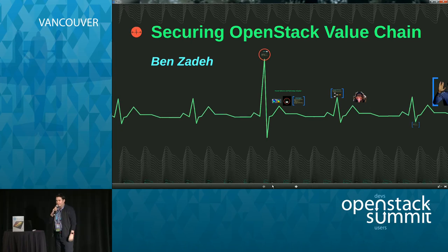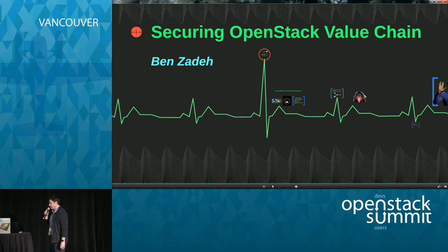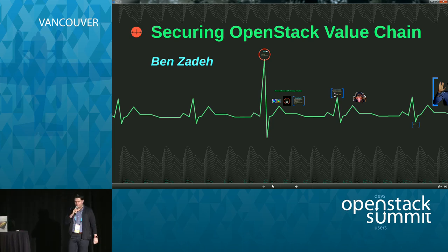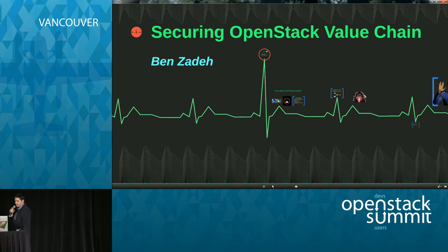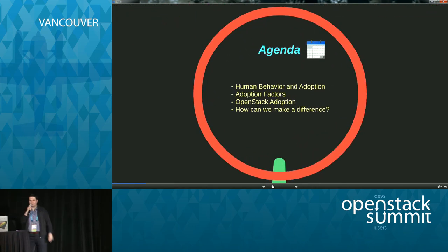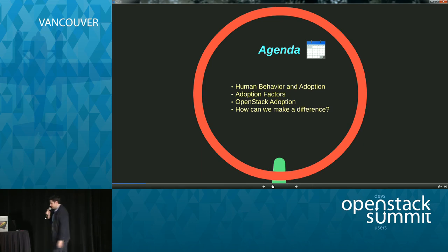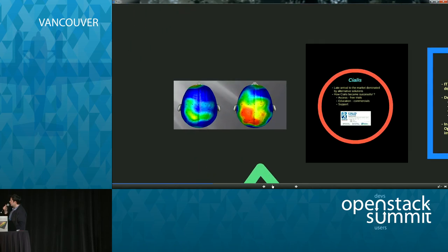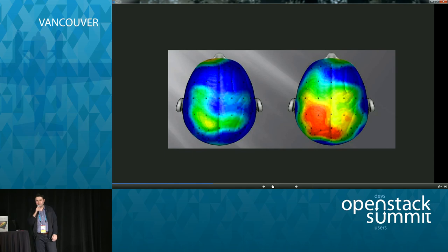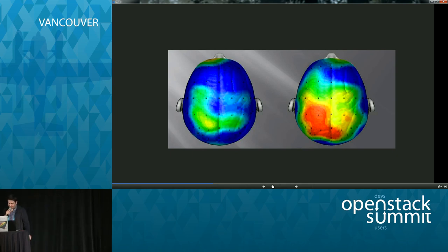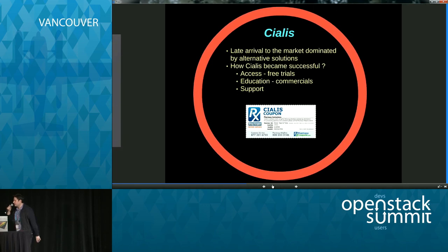Hello everyone. I know you've had a lot of technical sessions today, so I'm going to do something a little bit different. My name is Ben Zadeh. I'm part of the Helion OpenStack Professional Services Team. My background is development. Part of my research during my graduate program was on technology adoption, because human psychology was very interesting to me. I want to talk about human behaviors that lead to technology adoption and how we can apply those learnings to OpenStack.